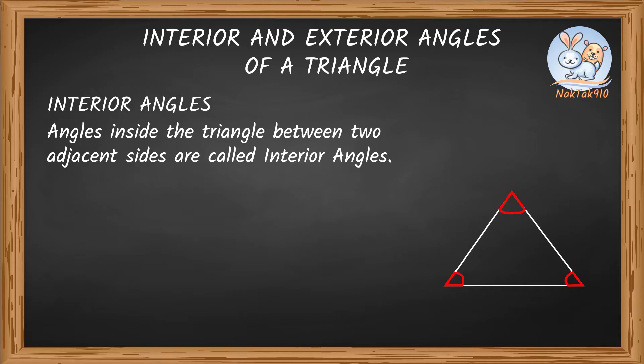Interior angles in any triangle add up to 180 degrees. This property of the triangle is known as angle sum property of a triangle.